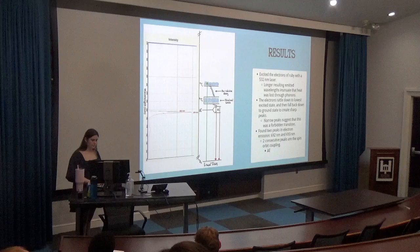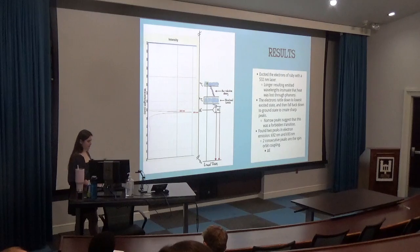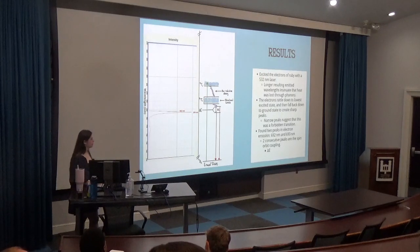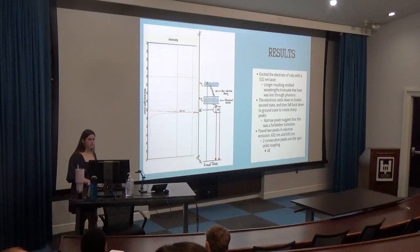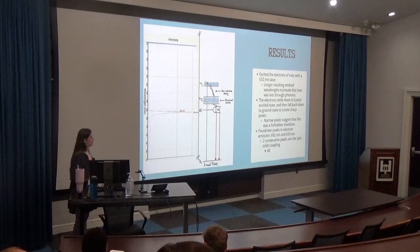One thing to note about our results is that we had very narrow peaks. This suggests that there was a forbidden transition, which is just due to the first excited state. Furthermore, we also have two consecutive peaks, which is a little bit interesting. This represents something called spin-orbit coupling — the interaction of the electron's spin with the electron's motion around the nucleus.